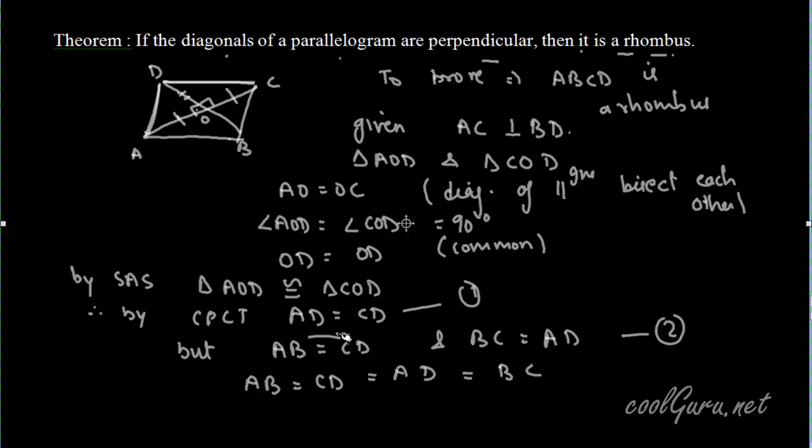AB is equal to CD, CD is equal to AD, and AD is equal to BC. That is, all sides are equal. Hence this parallelogram ABCD is a rhombus.